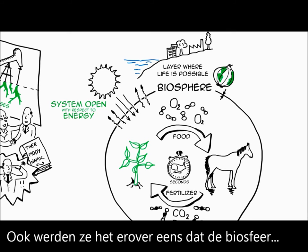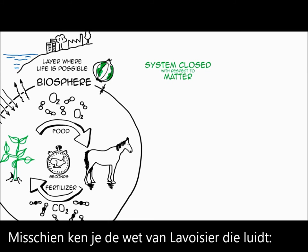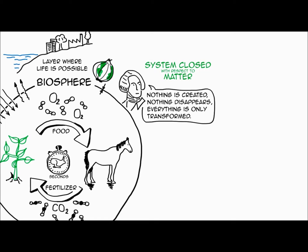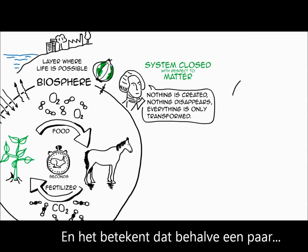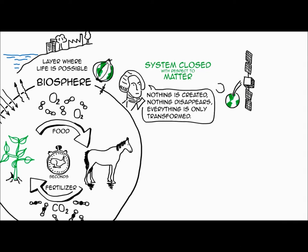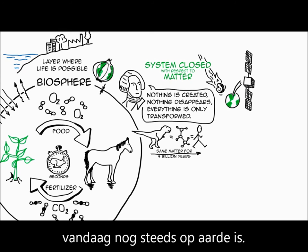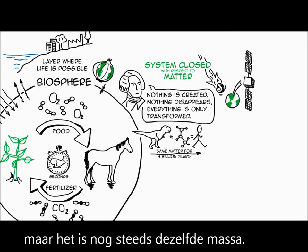They also agreed on the fact that this system is closed with respect to matter. So maybe you remember this very famous phrase from Lavoisier that says, nothing is created, nothing disappears, everything is only transformed. This is also known as the first law of thermodynamics, the law of conservation of matter. And it means that except for a few satellites and meteorites, all the matter that was on Earth four billion years ago is still here today. It has changed form and the molecules reorganized themselves over time, but it is still the same matter.